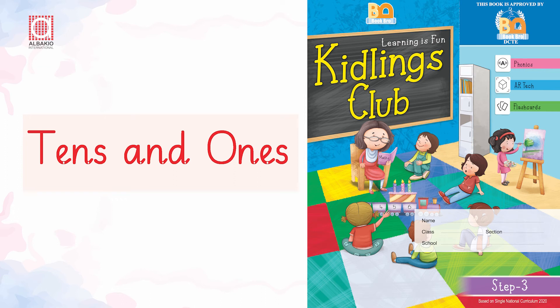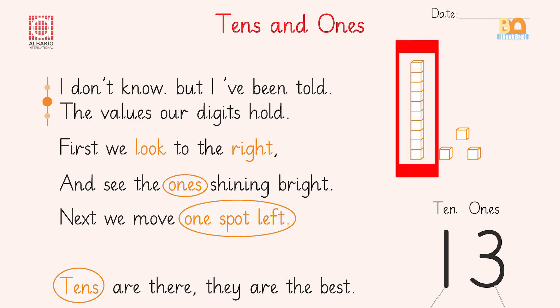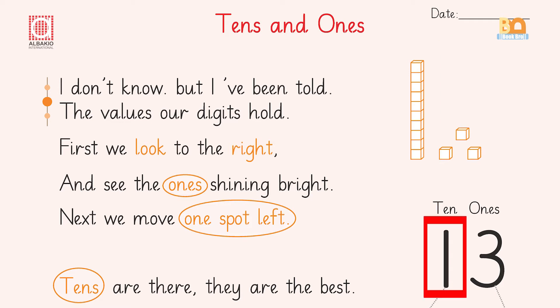Kiddlings Club Step 3: Tens and Ones. Dear kids, let us count these blocks: 1, 2, 3, 4, 5, 6, 7, 8, 9, and 10. These are 10 blocks. 10 ones make a 1-ten.